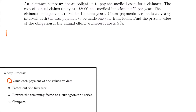Before we go through with valuing each payment at the valuation date, let's write down everything we know from this problem. The first thing is that we have annual claims of $3,000 — the first payment is $3,000 and it's going to increase by 6% each year. So our initial payment X is equal to $3,000. The inflation rate is 6% per year, so R is equal to 0.06.